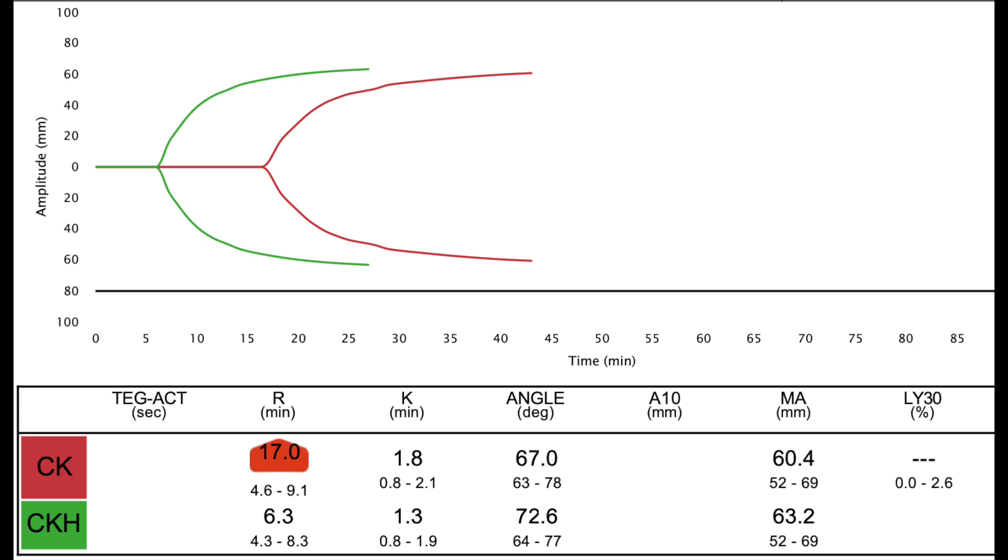This needs to be compared with citrated kaolin and citrated kaolin heparin tests. This will indicate if there is any heparin effect in the blood. If the R time is prolonged in citrated kaolin sample, normal in citrated kaolin heparinase sample, this indicates there is residual heparin left in the patient circulation. This should be treated with protamine.